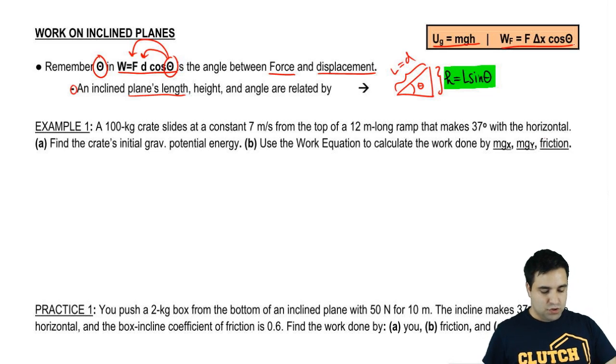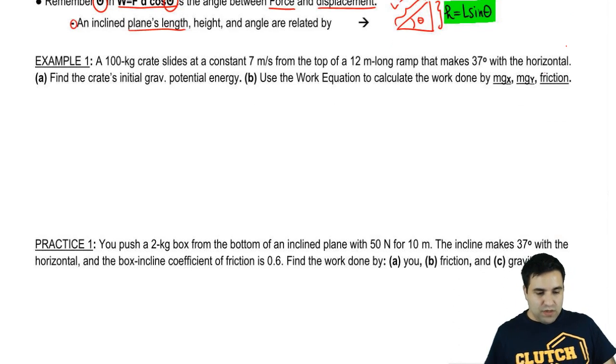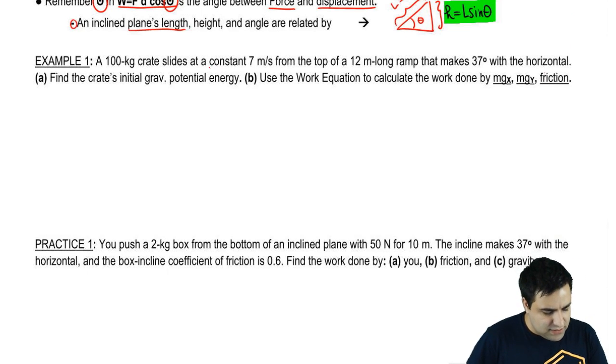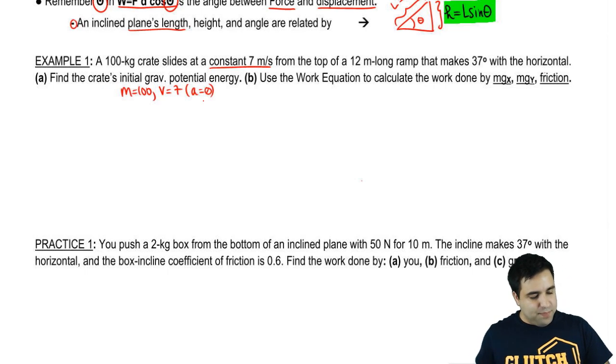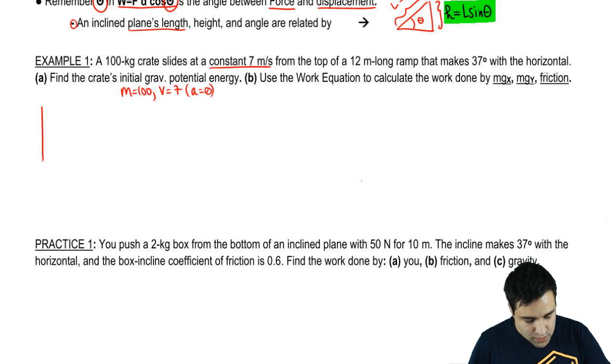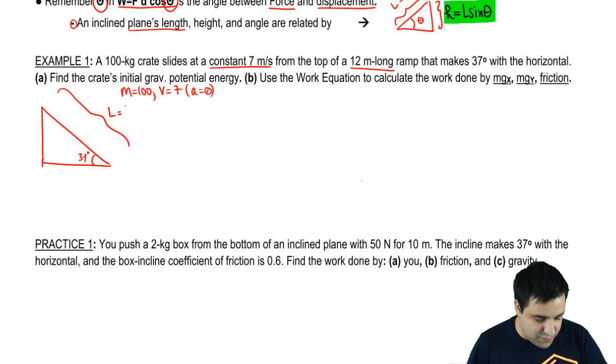I'm going to do an example that I want you guys to try as a practice problem. So let's check this out. I have a 100 kilogram crate sliding at a constant 7. Let me write some of this stuff down. Mass is 100, velocity is 7, it's a constant velocity which tells me the acceleration is 0. From the top of a 12 meter long ramp that makes 37 degrees with the horizontal. So let me draw a little ramp here making 37 with the horizontal. It slides 12 meters, so the length of your displacement or distance is 12. You start up here and you're going to slide down.